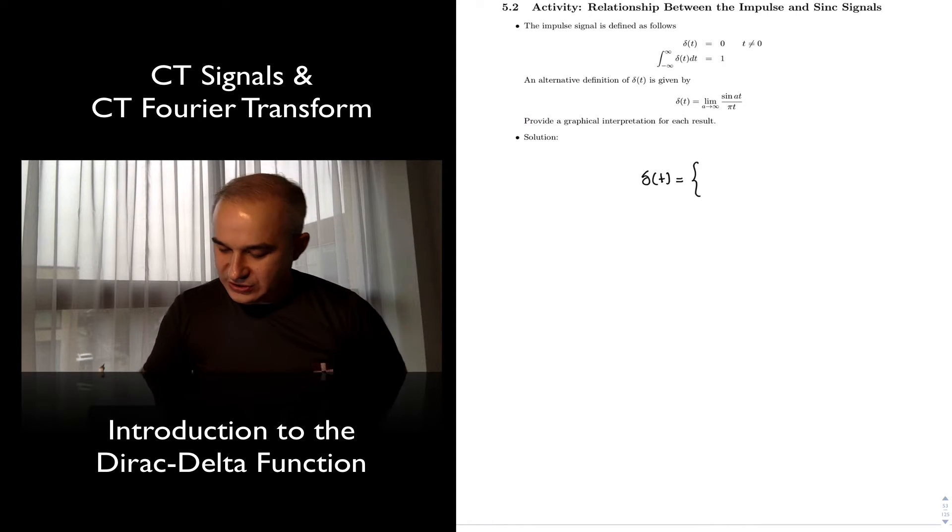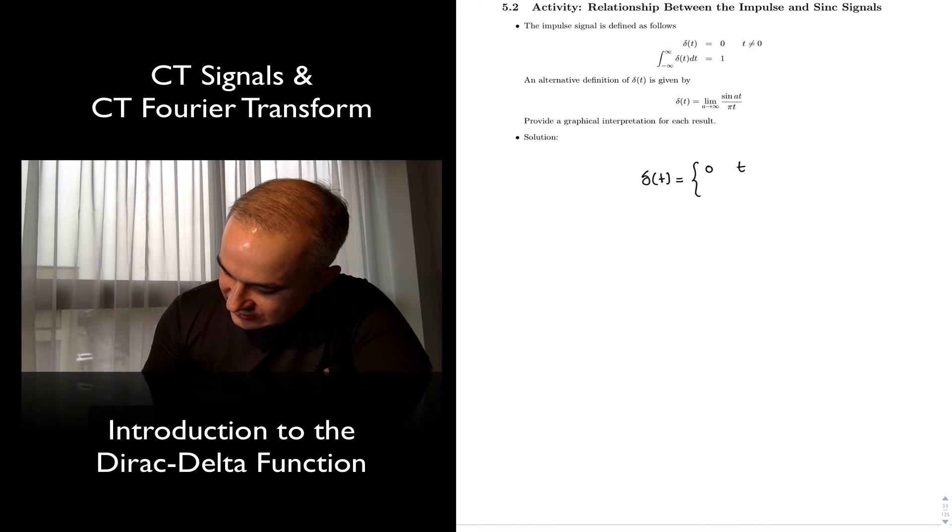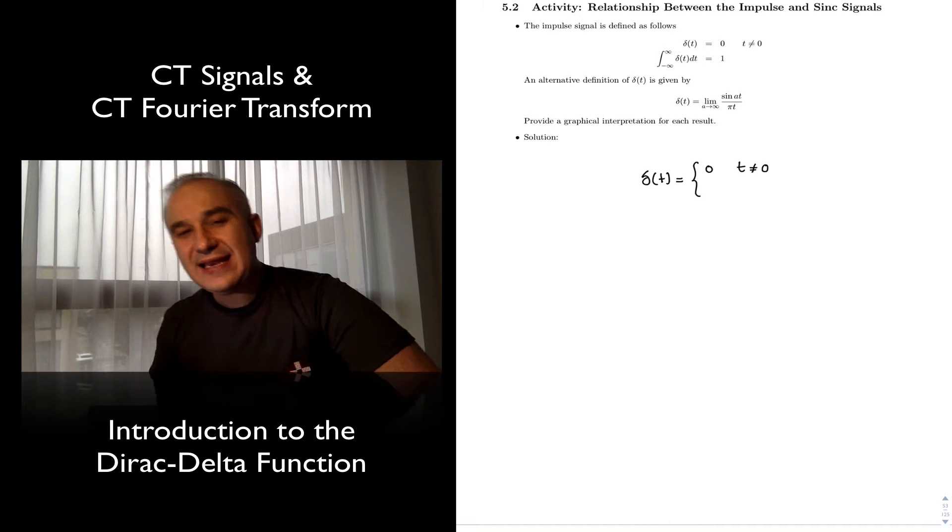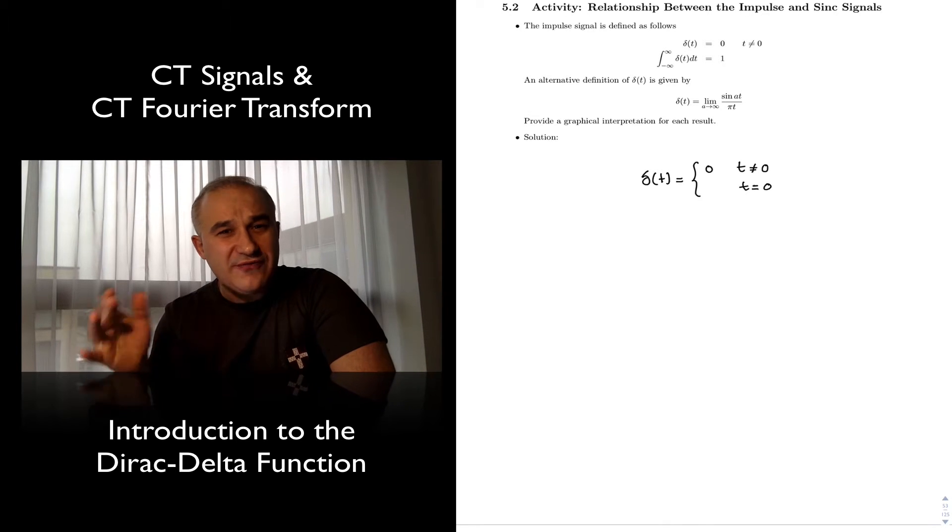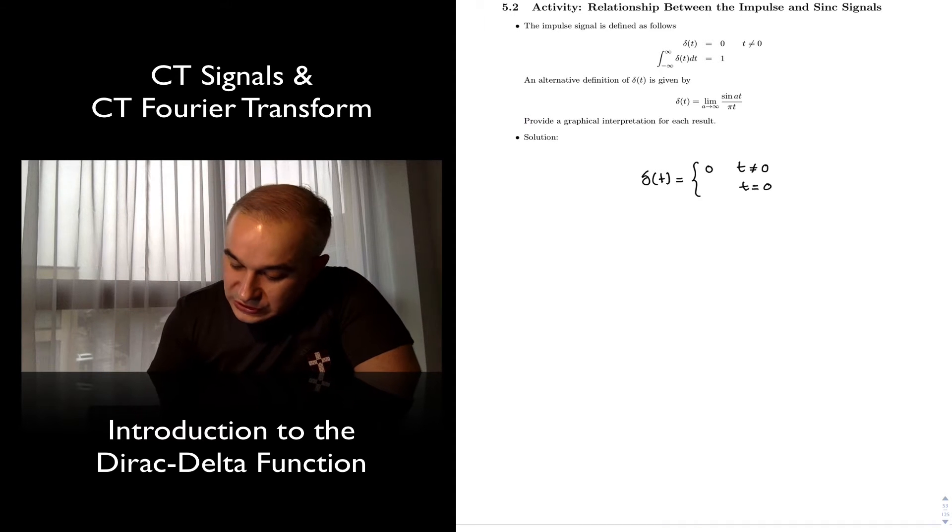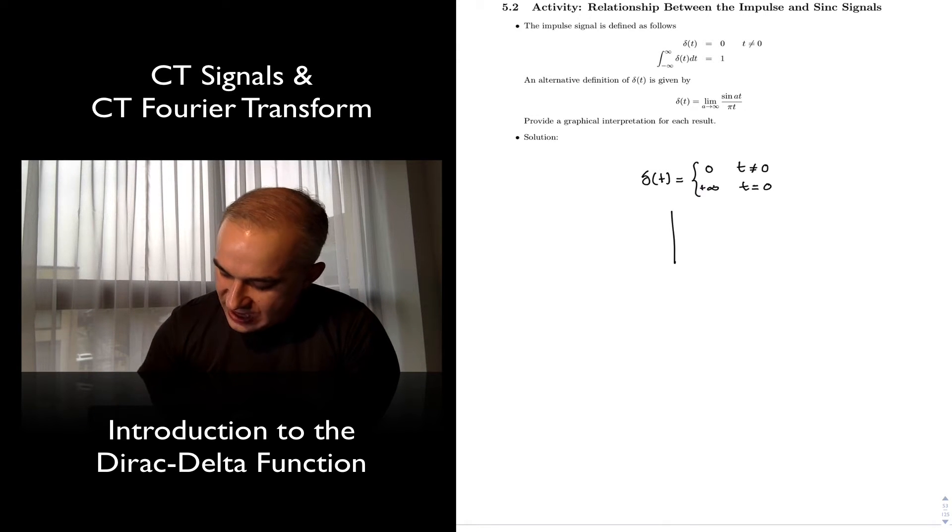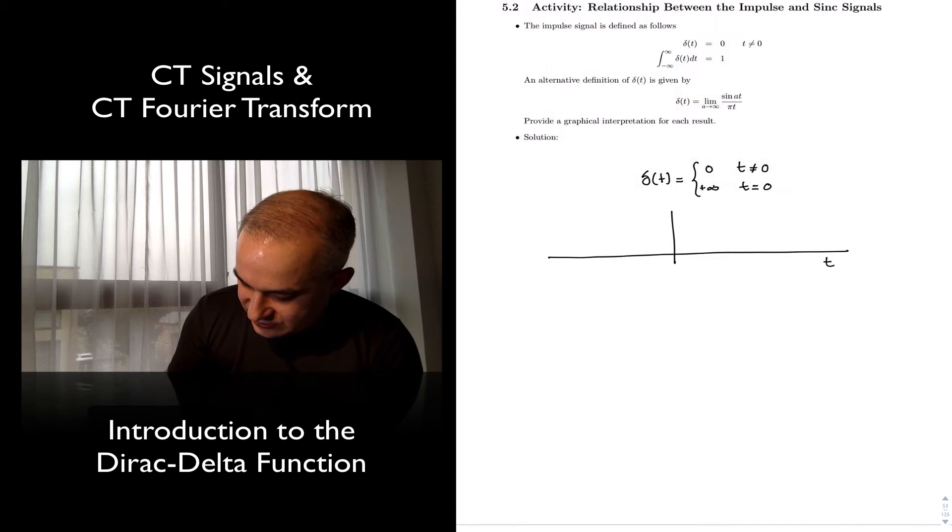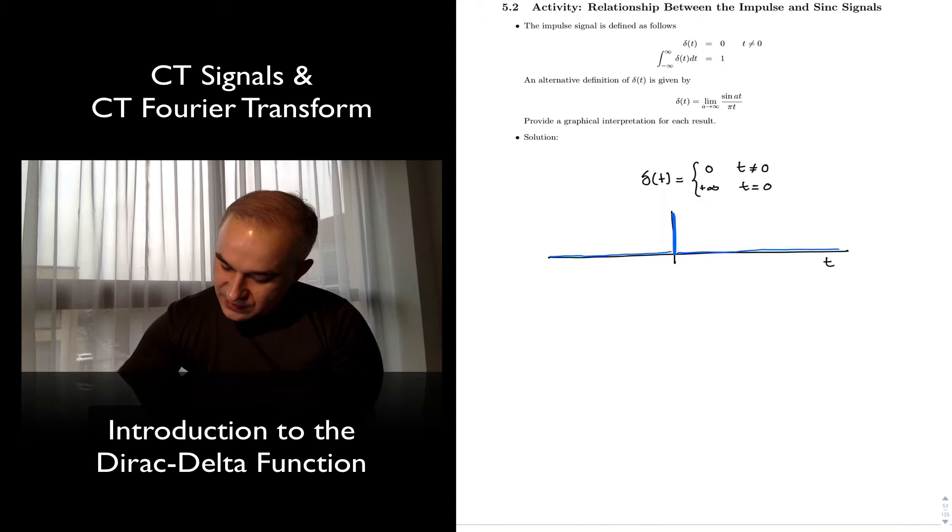Well, this is a loose definition as a signal that is zero at every point, so zero for any t different from zero, and it is technically undefined at t equals zero. At t equals zero you have an impulse, you can think of it loosely speaking as if this was plus infinity, meaning we have a function that if this is time, it is zero everywhere for every t that is different from zero, and then it has an impulsive nature at t equals zero.